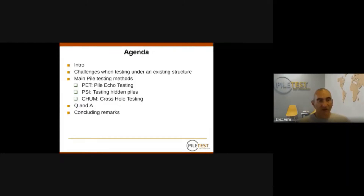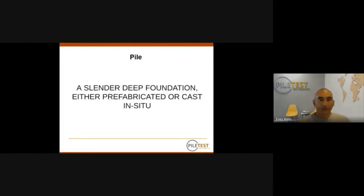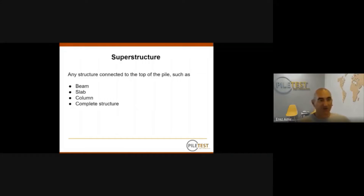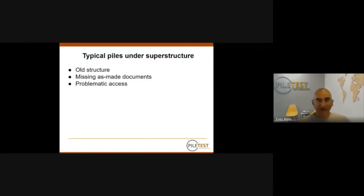Some definitions: a pile is a slender deep foundation element — it can be precast or cast on site. 'Slender' means it is much longer than it is wide. A superstructure, or structure for this presentation, is anything connected on top of the pile: a beam, a slab, a column, or a complete structure — anything firmly connected to the top of the pile.